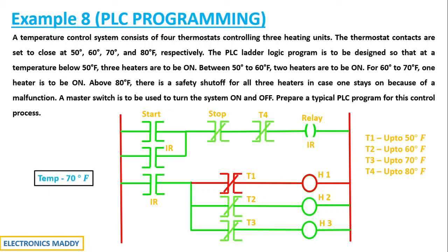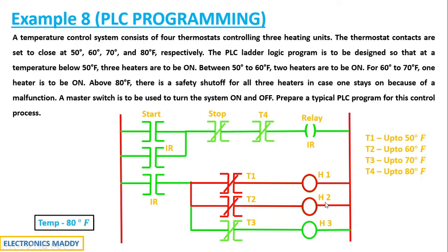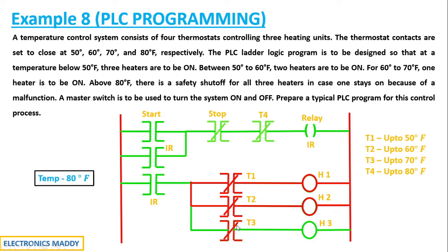If the temperature reaches 70°F, the heater corresponding to T2 should also turn off because it has an operating temperature of up to 60°F. Correspondingly, T2 acts as an open circuit, no current flows through that path, and H2 also turns off. Now, if the temperature reaches 80°F, T3 will be turned off — it acts as an open circuit, no current flows through that path, and heating unit H3 also turns off.